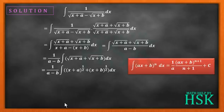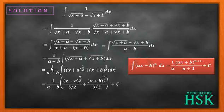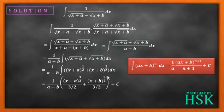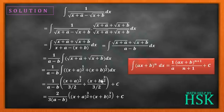Integrating both terms: 1 upon (a minus b) times — integrating (x plus a) to the power 1/2 gives (x plus a) to the power 3/2 upon 3/2, and integrating (x plus b) to the power 1/2 gives (x plus b) to the power 3/2 upon 3/2. The 3/2 in the denominator becomes 2/3, so the final answer is 2 upon 3(a minus b) into [(x plus a) to the power 3/2 plus (x plus b) to the power 3/2] plus C.